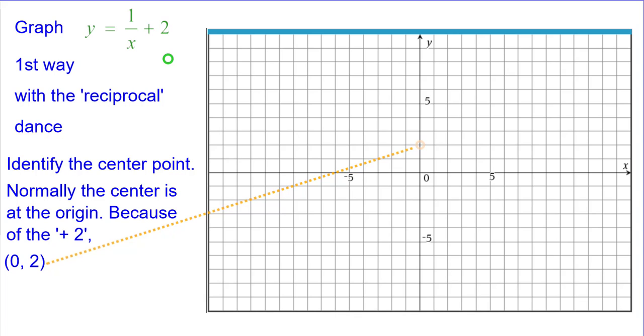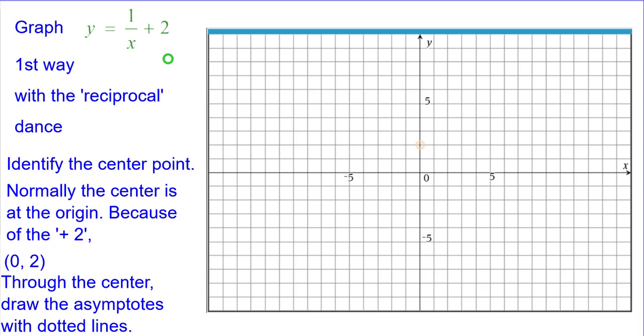So, plot that in a light orange color and through the center, we're going to draw the asymptotes with dotted lines. So y equals 2 and x equals 0 are going to be our asymptotes.